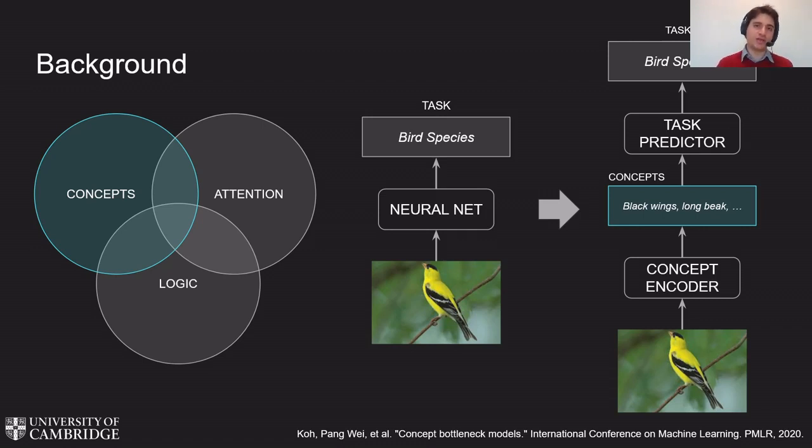The task predictor instead takes as inputs such concepts to predict a downstream task, a more complex phenomenon such as a bird species. This architecture allows to trace task predictions back to the intermediate set of concepts, making explanation extraction much easier and more interpretable.